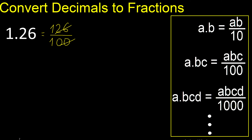Can be simplified because it can be divided by the same number. Divided by 2, divided by 2: 63 over 50. Finish, because it cannot be divided by the same number.